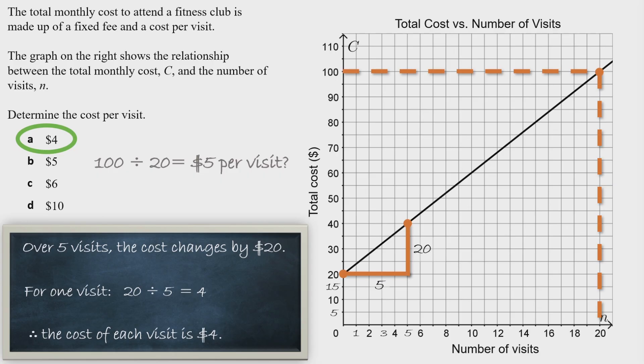If the graph started at zero—in other words, if it was a direct variation—we could do that. Watch out though: $5 is an option in the multiple choice to throw you off. Similarly, the $6 option comes from the point at $60 and 10 visits: 60 ÷ 10 = 6, but that's also incorrect.